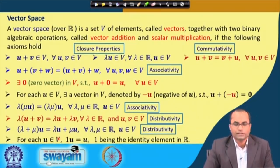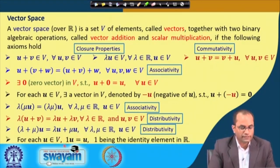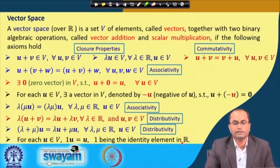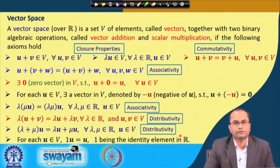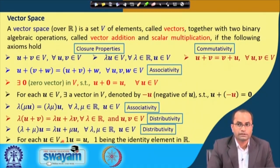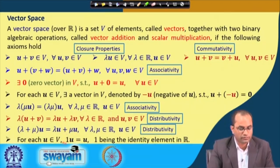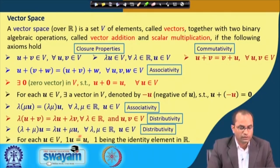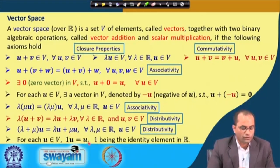The last property: for each U from V, we should have 1·U = U, where 1 is the identity element in R (the number 1 in the set of real numbers). This scalar multiplication of U by 1 must equal U, and this property must be satisfied by all elements. So we have many properties, but as stated, the two closure properties are most important.